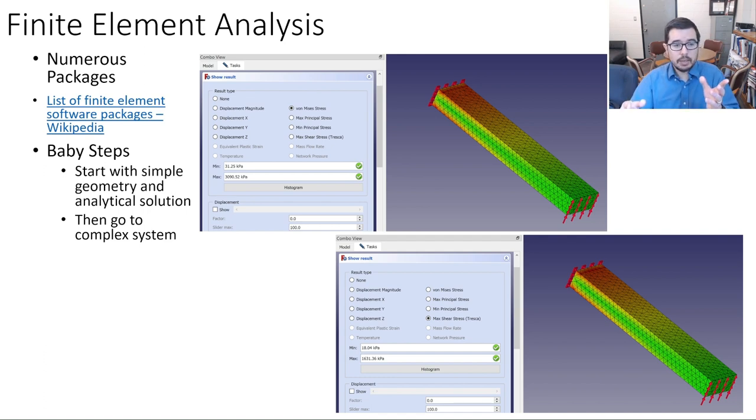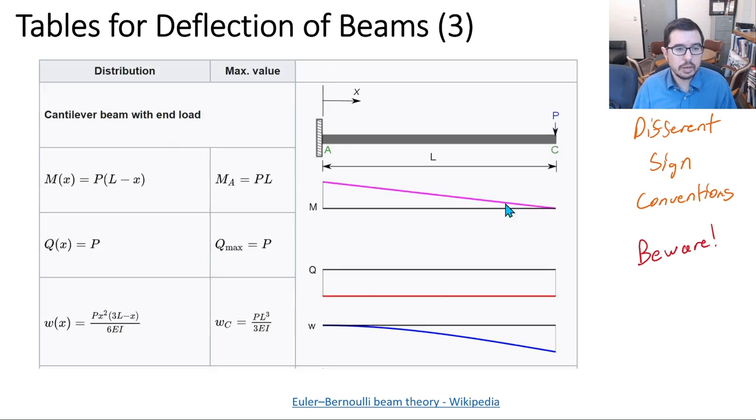So in this case, this is a situation where we actually have a cantilevered beam with a fixed end and a point load on the end or a force on the end. Now, it's probably hard to see that because it's so small. But what essentially it is, is this situation. There's a force being applied at the end, and it's fixed on this end.